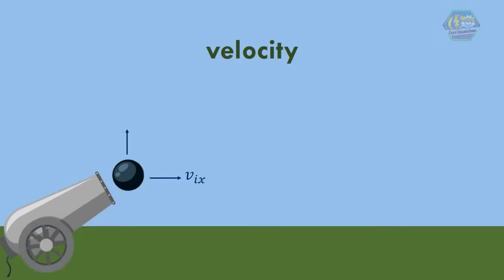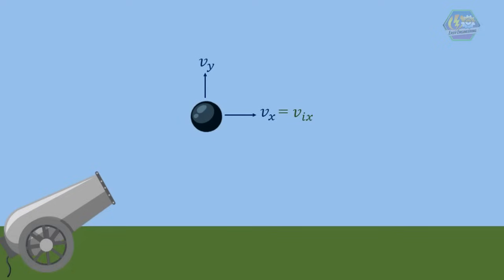This means that the cannonball is moving upward while moving to the right. When the cannonball moves upward, the velocity in x direction is constant or the same as the value of vx.